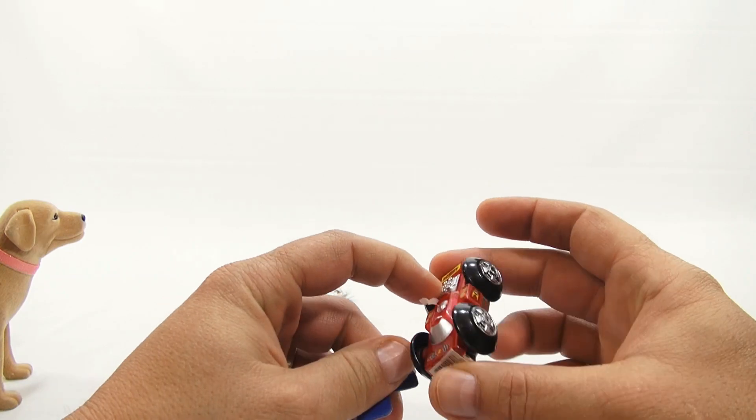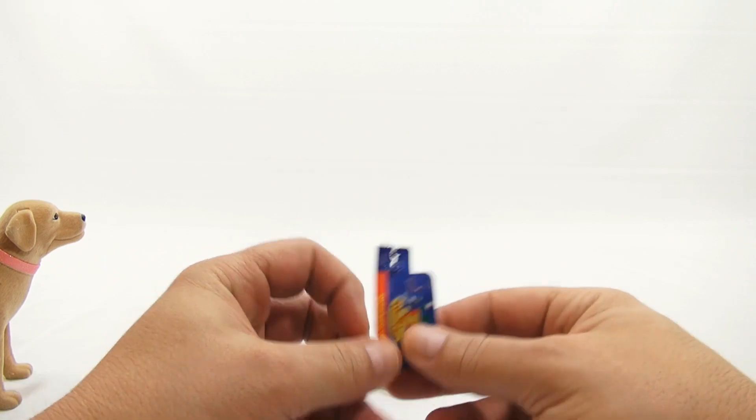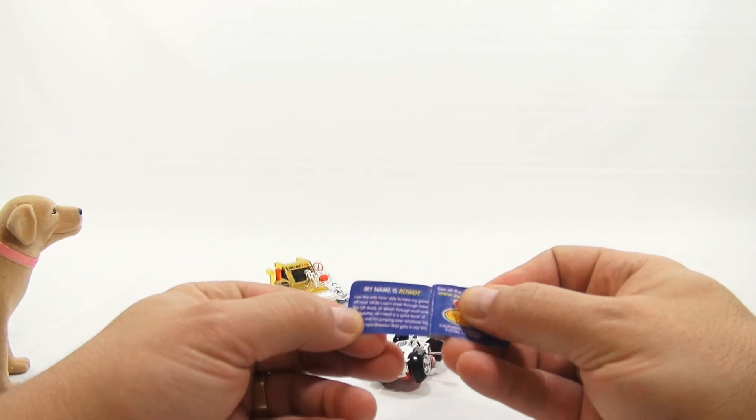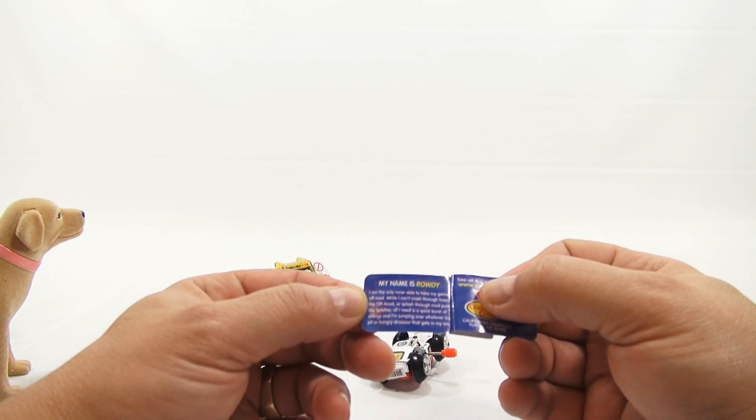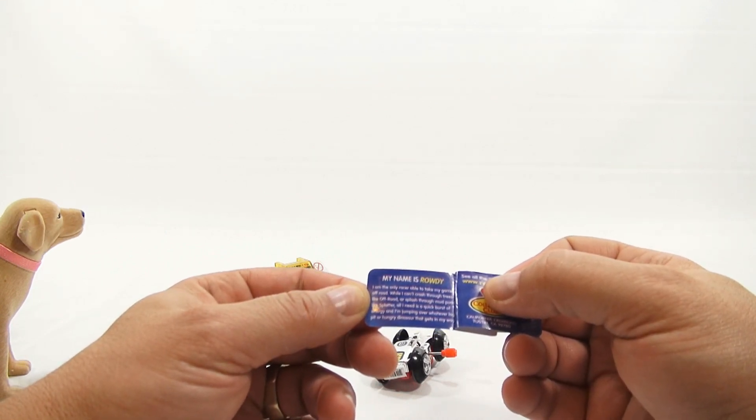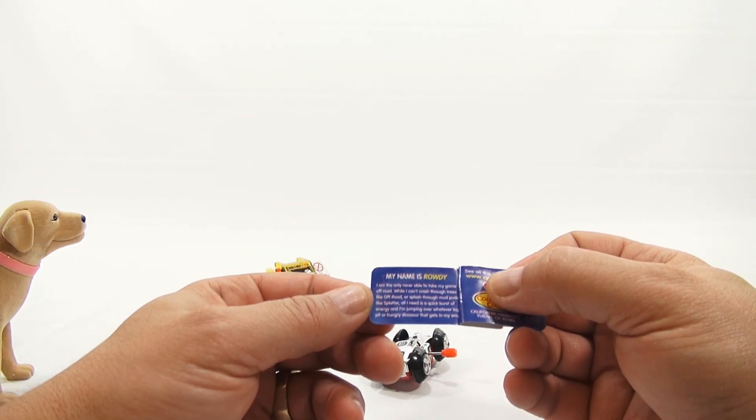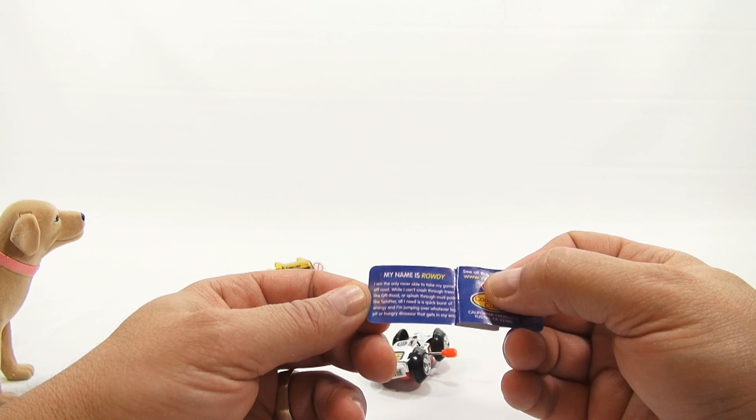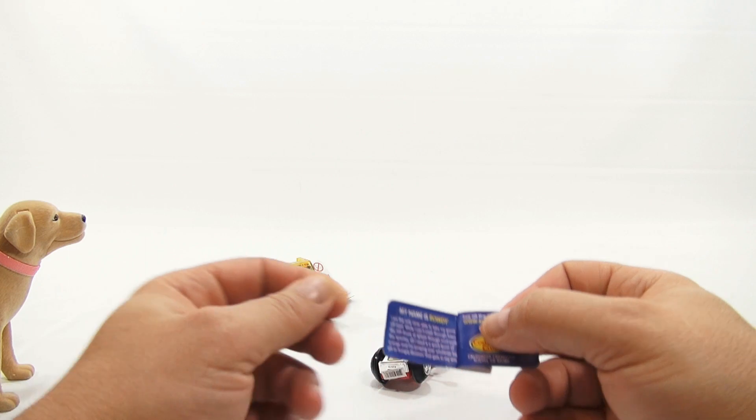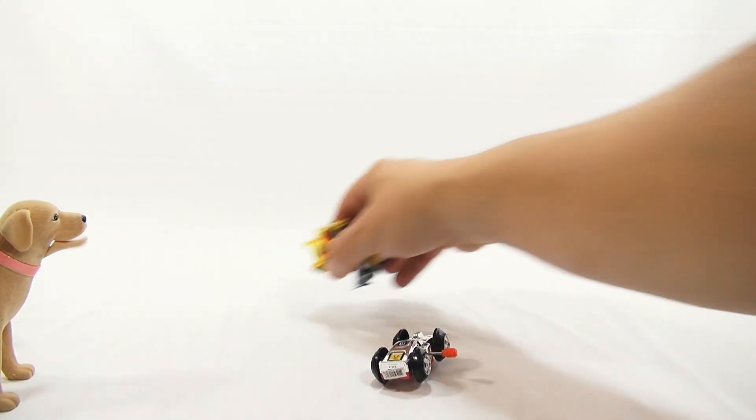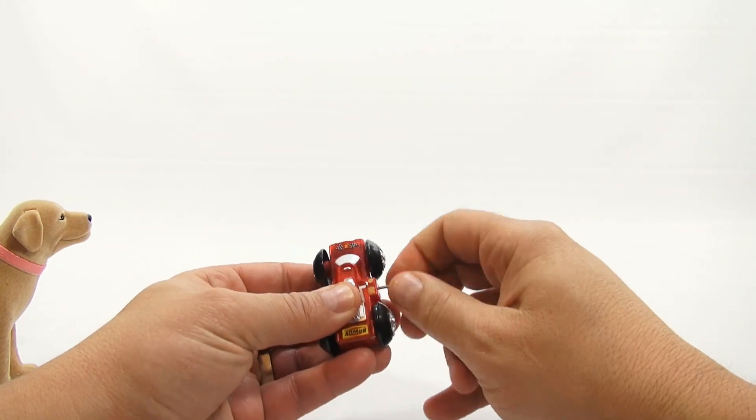He's Rowdy. It says Rowdy there, and he's got two sides. It's Z on that side. And he's chrome. I like the chrome side. Chrome and red. My name is Rowdy. I am the only racer able to take my game off-road. While I can't crash through trees like off-road or splash through mud puddles like Splatter, all I need is a quick burst of energy, and I'm jumping over whatever log, pit, or hungry dinosaur that gets in my way. What kind of races is he going on? Crazy races. Hungry dinosaurs? Sounds like what I feel like after I ate some sugar. Yeah, probably. So let's see what he does.